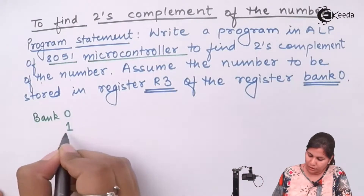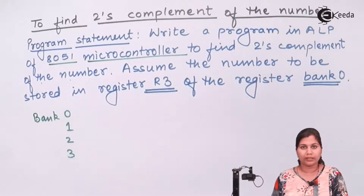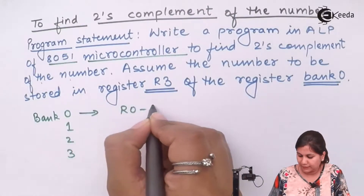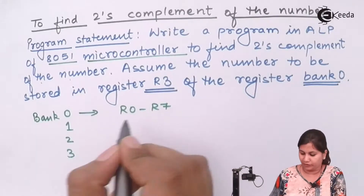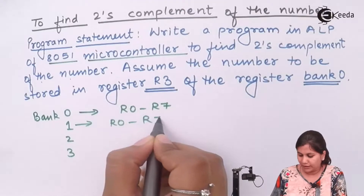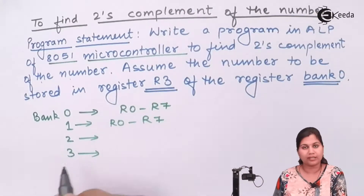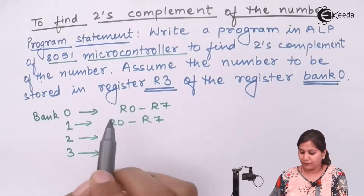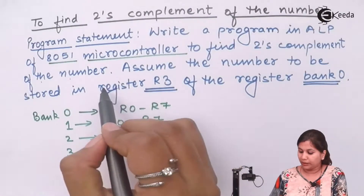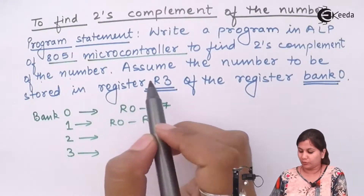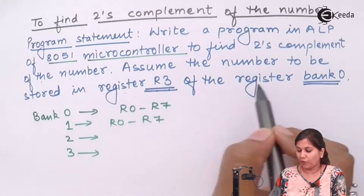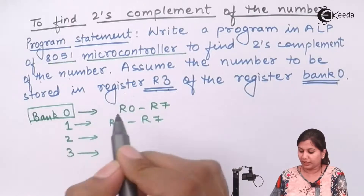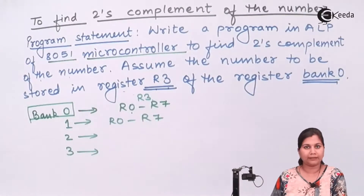The four register banks are bank 0, 1, 2, and 3. Each of these register banks has 8 registers from R0 to R7. Bank 1, bank 2, and bank 3 also each have R0 to R7. To use these registers we have to first select the register bank. Since our number is stored in register R3 of register bank 0, we have to select bank 0 first.